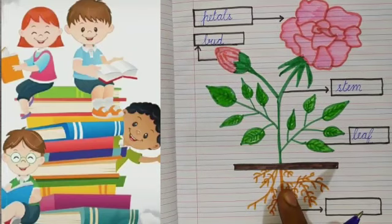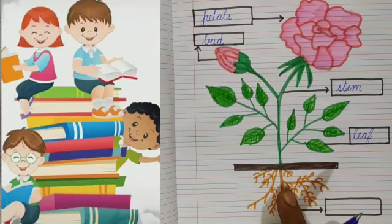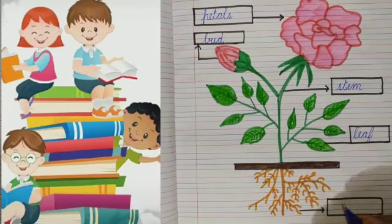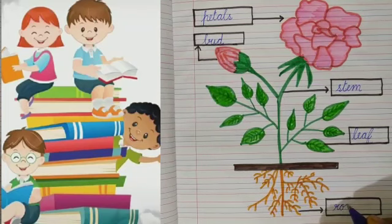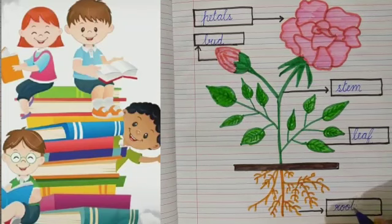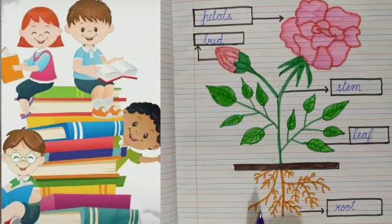This is the most important part of a plant: root. Root. R-double O-T, root. Students, you have to draw this picture in your notebook.